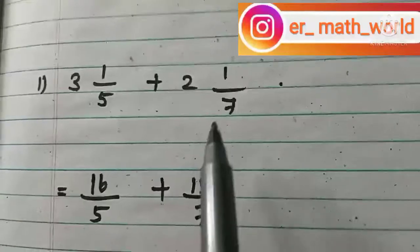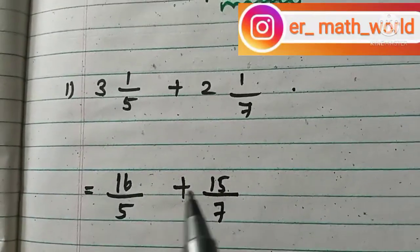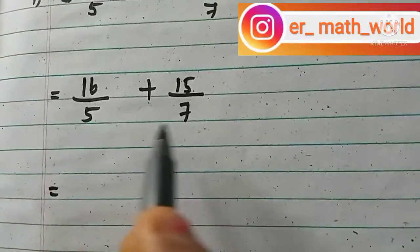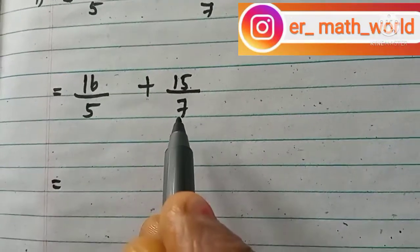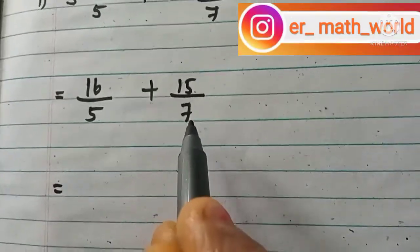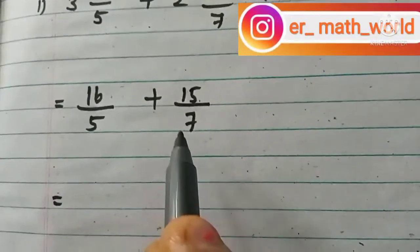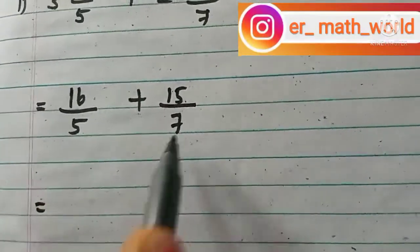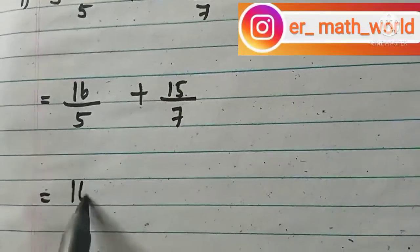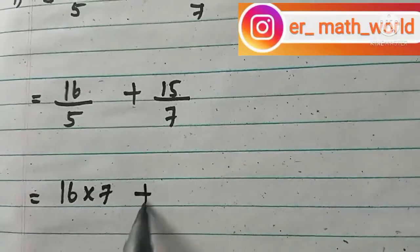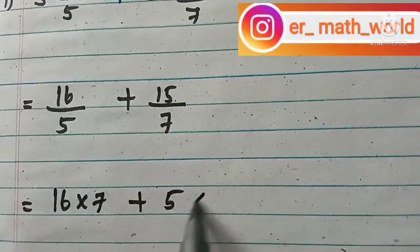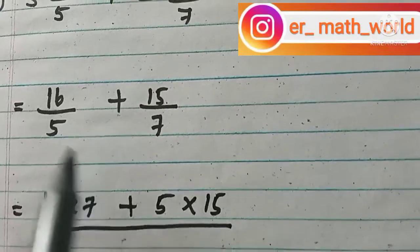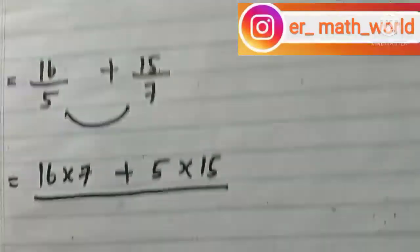This is the first procedure. The next procedure: these are unlike fractions — fractions which have two different denominators — so we have to do cross multiplication. We get 16 times 7, plus 5 times 15, the whole divided by 5 times 7. These two denominators are taken as common.